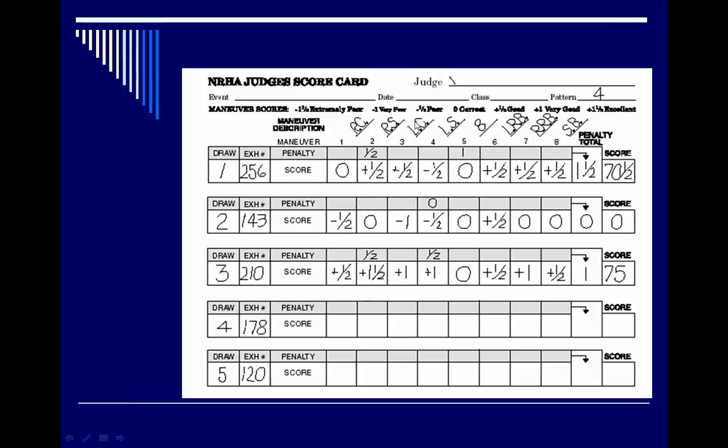Here's a completed score sheet for exhibitor number 256. The maneuvers shown include right circles, right spins, left circles, left spins, the figure eight, and so on. Penalty points are assessed in one section, maneuver scores in another, and you can see that for every maneuver a horse does have a score recorded.